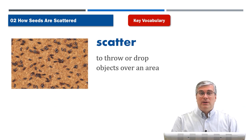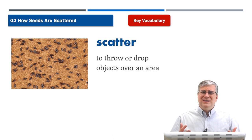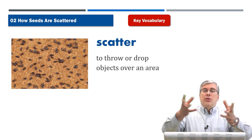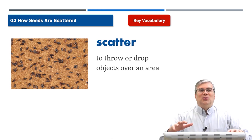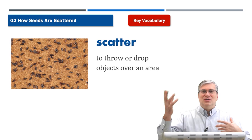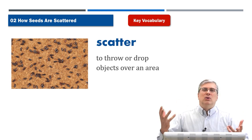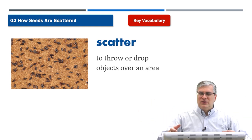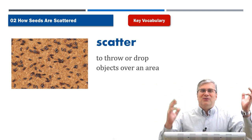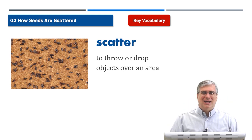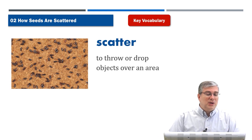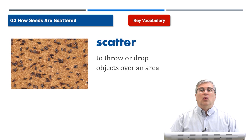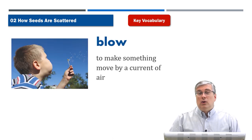We start with vocabulary. The first word is 'scatter.' You may have noticed it in the unit title: 'How Seeds Are Scattered.' Scatter means to throw or drop objects over a wide area. Think about your room — if you come home and throw your shirt over there, your pants somewhere else, your belt somewhere else, you scatter your clothes all over the room. To scatter is to throw things over a wide area, not very neatly, like seeds tossed randomly on the ground.